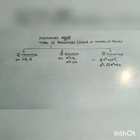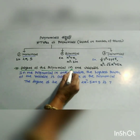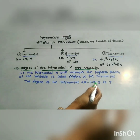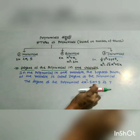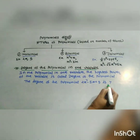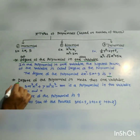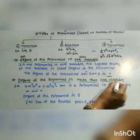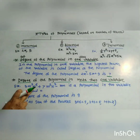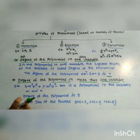Degree of the polynomial in one variable: 2x raised to 7 minus 5x plus 9. The highest power of variable x is 7, therefore the degree of this polynomial is 7. For a polynomial in more than one variable, for example 3m cubed n to the 6 plus 7m squared n cubed minus mn, this is a polynomial in two variables m and n.